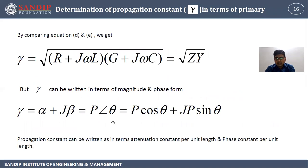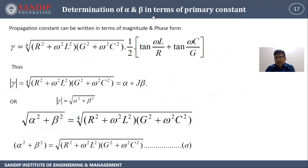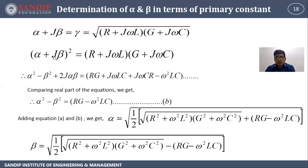To determine alpha and beta: the magnitude of gamma = √(α² + β²). Squaring (α + jβ)² = (R + jωL)(G + jωC). Expanding: α² − β² + 2jαβ = (R + jωL)(G + jωC). Comparing real and imaginary parts: α² − β² = RG − ω²LC.